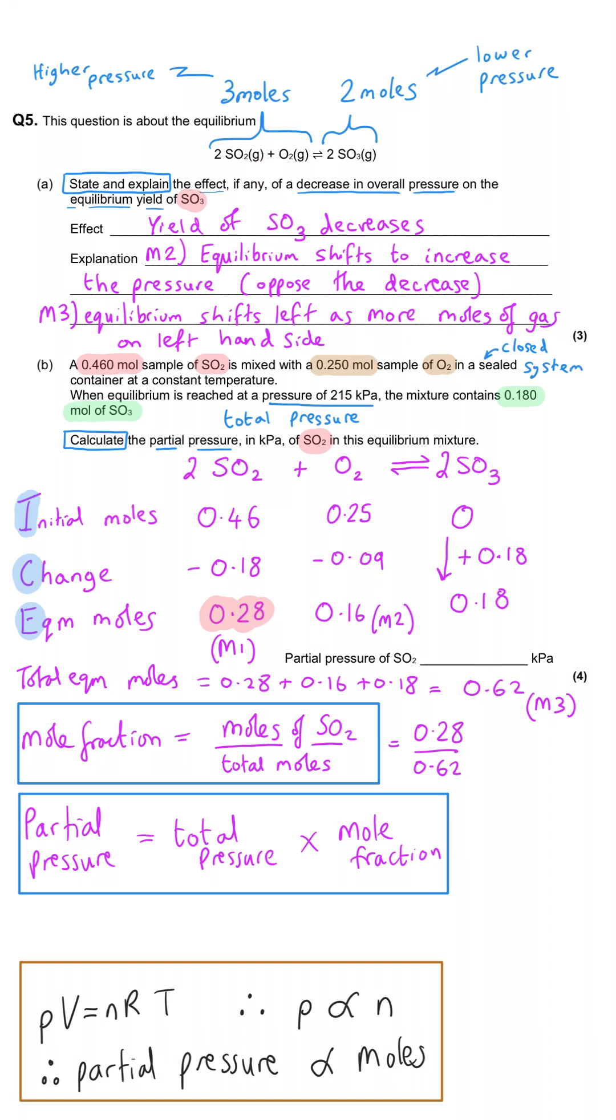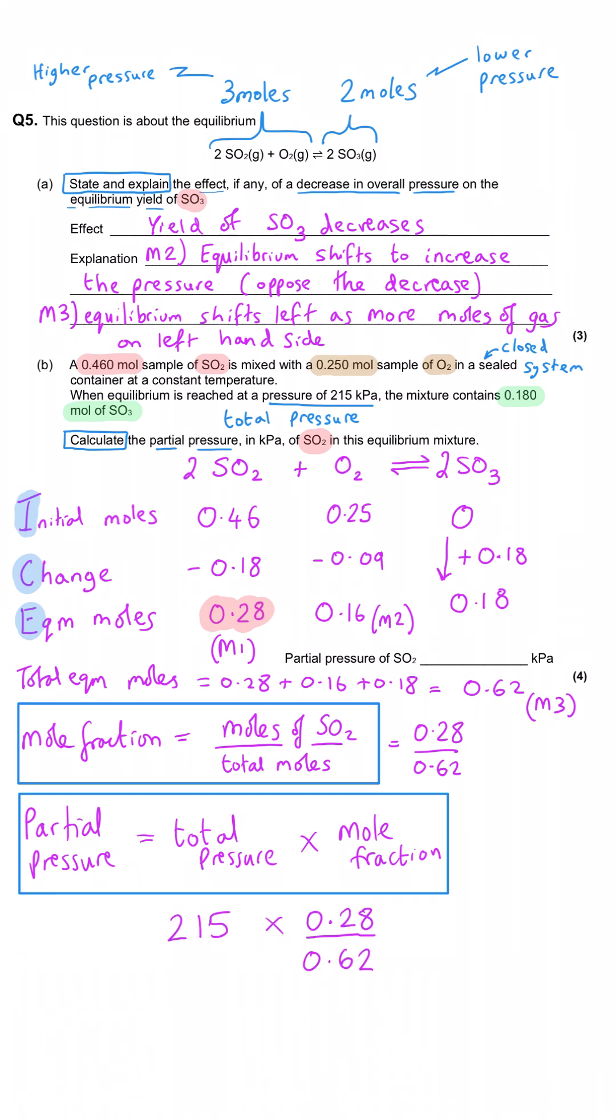And so the SO2 mole fraction is 0.28 out of our total 0.62. And we don't actually need to calculate this value because what we're going to do now is we're going to multiply this fraction by the total pressure, 215, to arrive at the partial pressure for SO2. And this gives us an answer of 97.1 kilopascals, or 97 kilopascals. The precision isn't too important because we haven't been told to give a particular number of significant figures, although all of the data given so far is to three significant figures. So 97.1, probably slightly better.